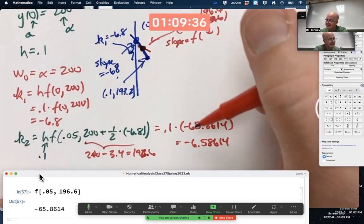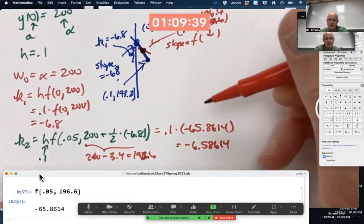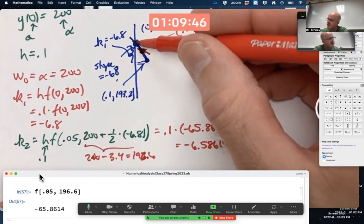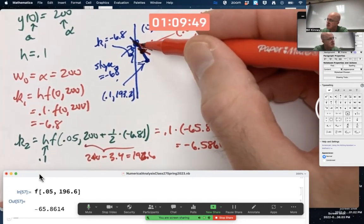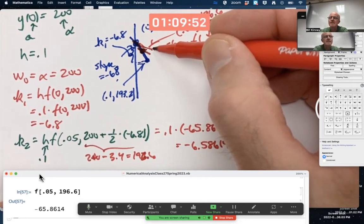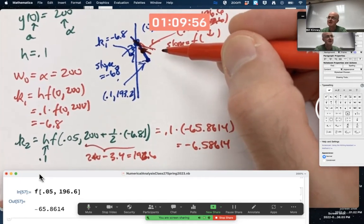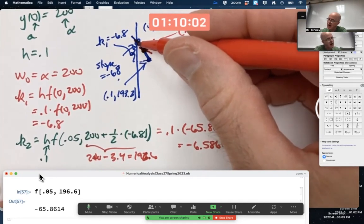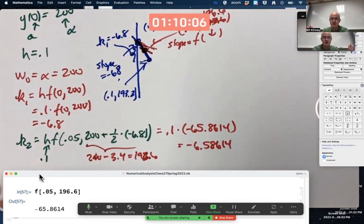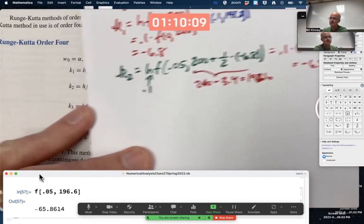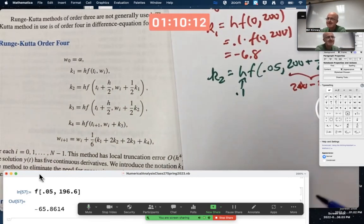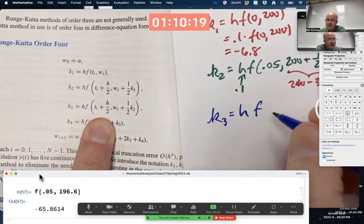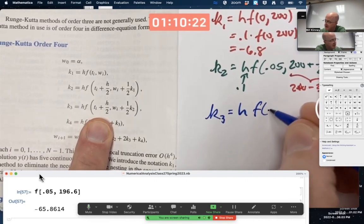So this becomes 0.1 times negative 65.8614, that'll be negative 6.58614. Effectively, we're using that slope, the negative 65.8614, at this point, and kind of like translating it back up there. It's not the true tangent line up here, but it's like we're using it to estimate K2. Is that a good idea? Evidently, it is. We're using this slope at this point to estimate the change in Y from this point. It's all part of a weighted average, though, still.